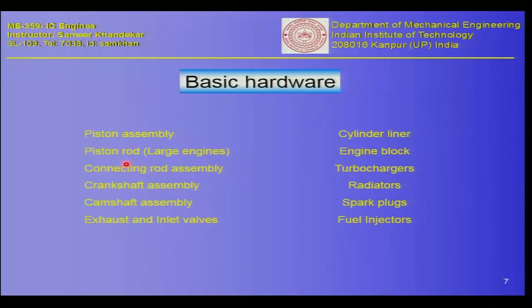We will continue the discussion on engine hardware. We have seen the types of engines — 2-stroke engine, 4-stroke engine, and Wankel engine — and introduced key components like piston, piston rings, cylinder, connecting rod, and crankshaft. Let us enumerate these: piston assembly, piston rod (in large engines), connecting rod assembly, crankshaft assembly, and camshaft assembly for timing.